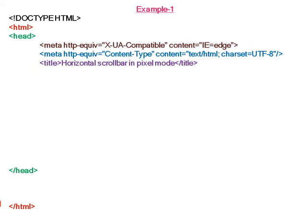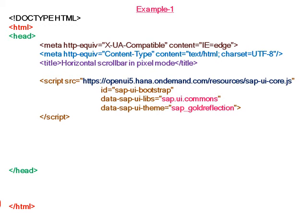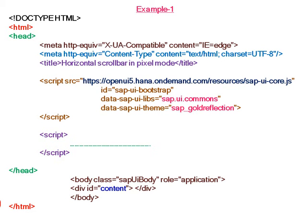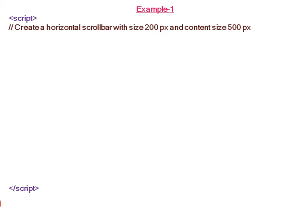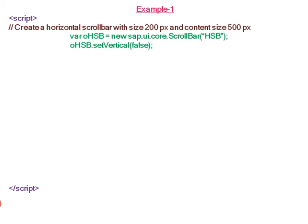The first example creates a horizontal scroll bar in pixel mode. We use the Gold Reflection theme. In the application section, we create a horizontal scroll bar with size 200 pixels and content size 500 pixels. Since it is a horizontal scroll bar, we set the property vertical to false.